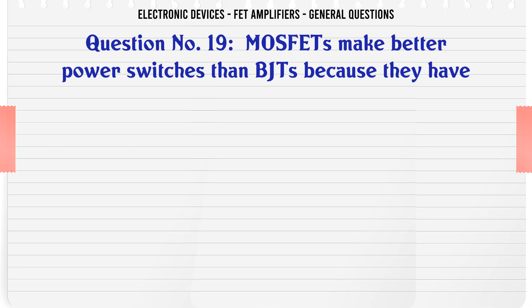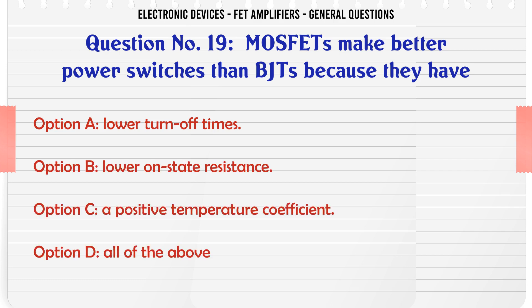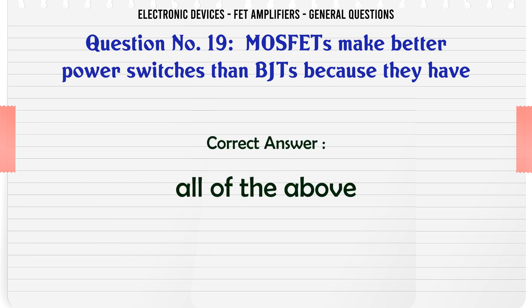MOSFETs make better power switches than BJTs because they have: A. Lower turn-off times. B. Lower on-state resistance. C. A positive temperature coefficient. D. All of the above. The correct answer is all of the above.